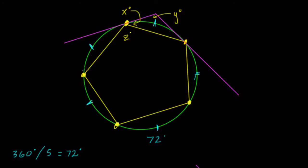Z is an inscribed angle formed by this chord and this one here. This inscribed angle is half of the arc it intercepts. If this is 72, and this is 72, and this is 72, then Z would be half of that sum.